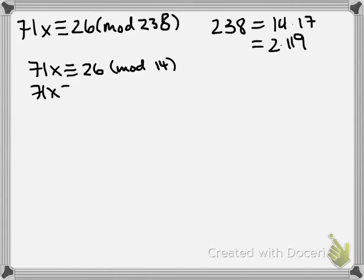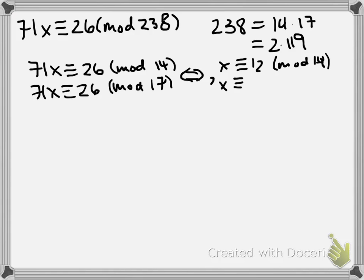So we know that our original congruence is the same as solving these two simultaneous congruences. And those are equivalent to reducing mod 14, where 71 is 1 mod 14 and 26 is 12 mod 14, so that first congruence becomes x congruent to 12 mod 14. The second one, 71 is also congruent to 3 mod 17, and 26 is obviously congruent to 9 mod 17.